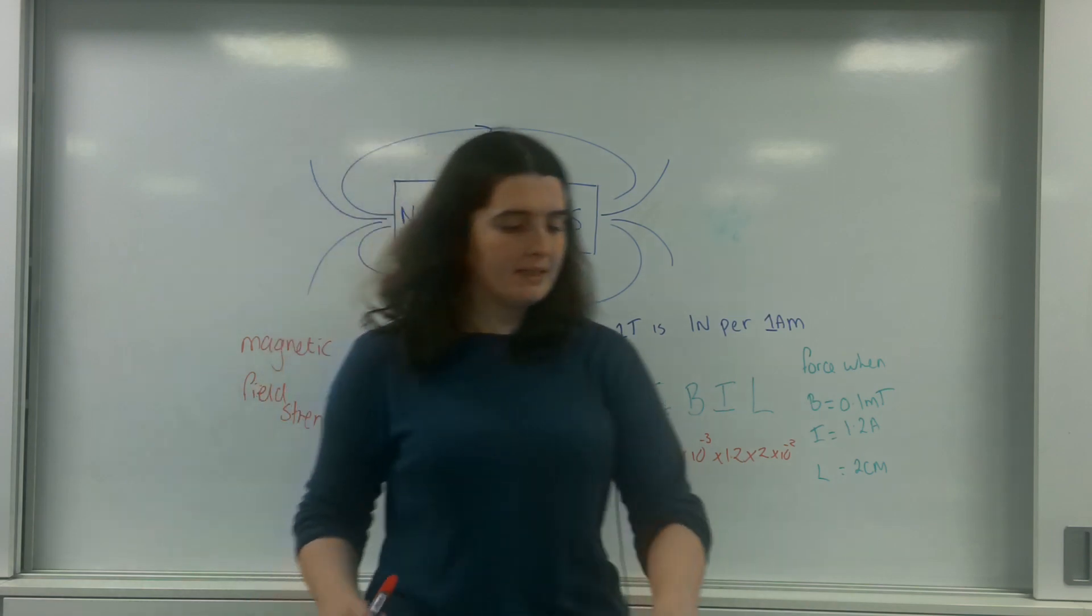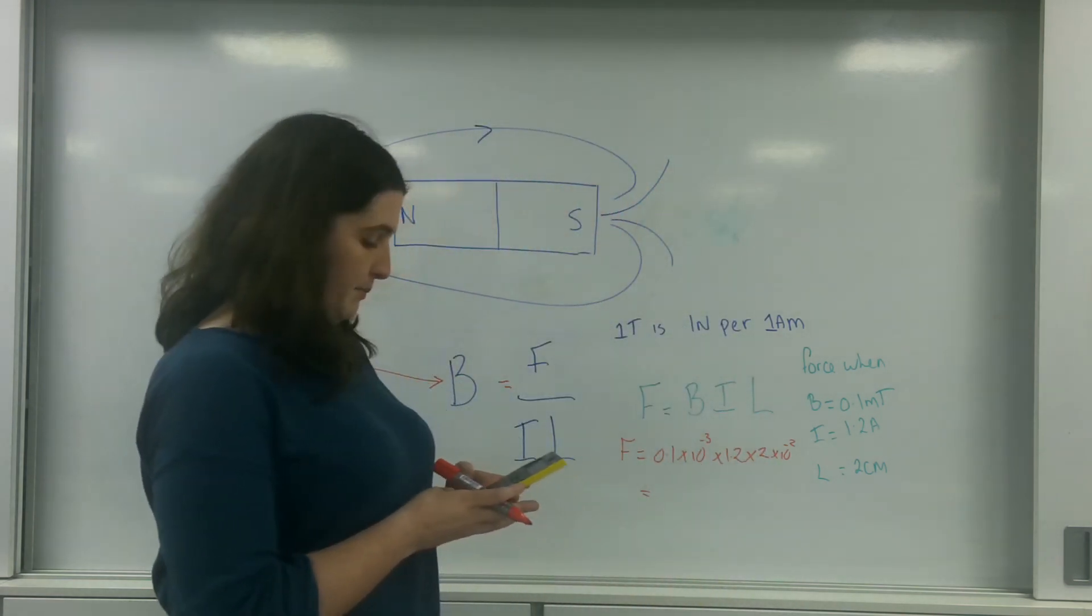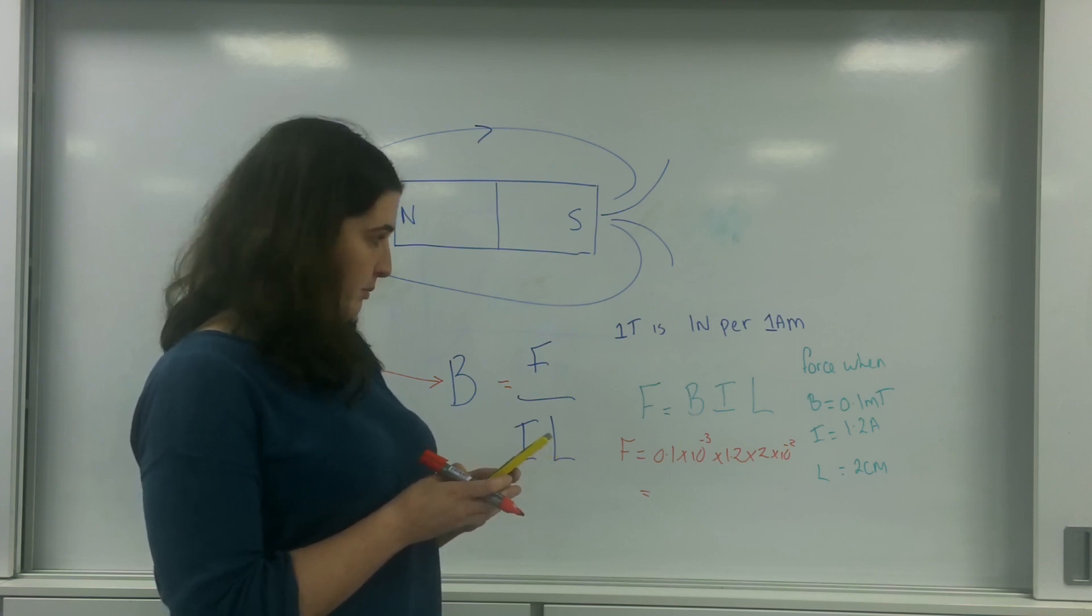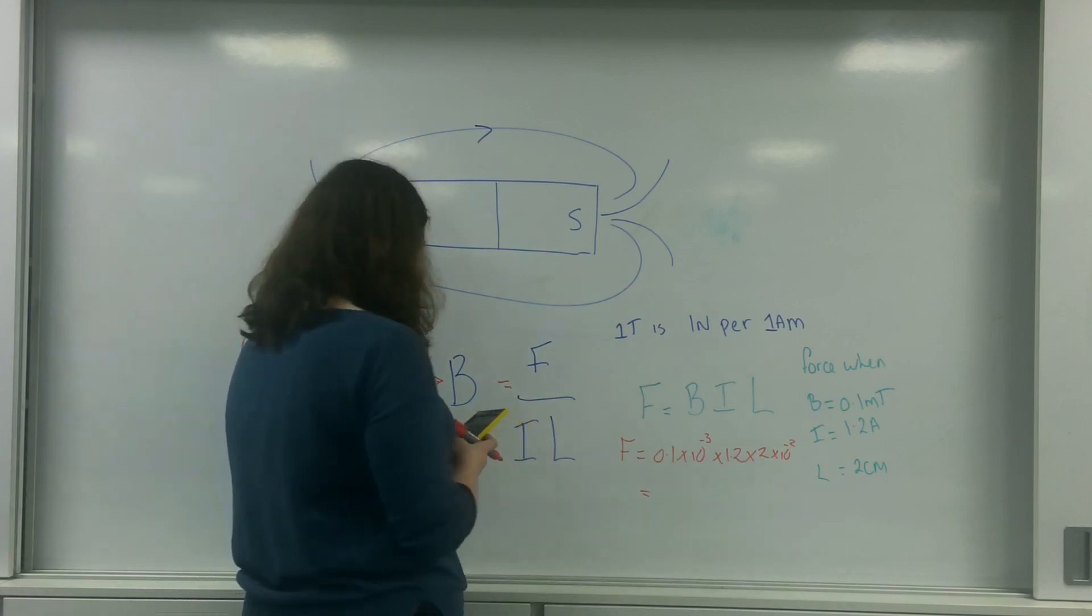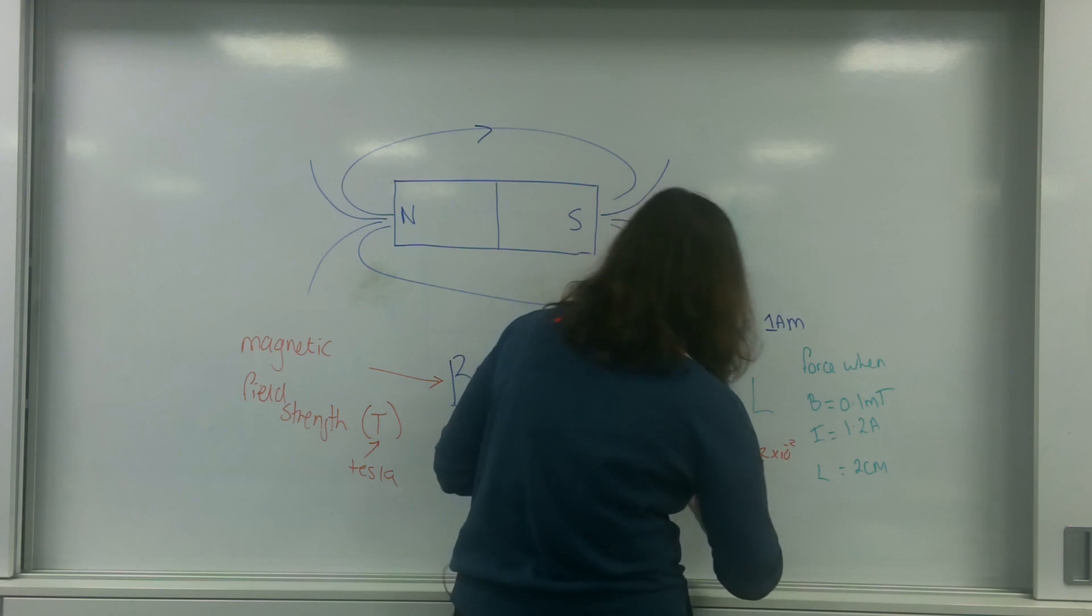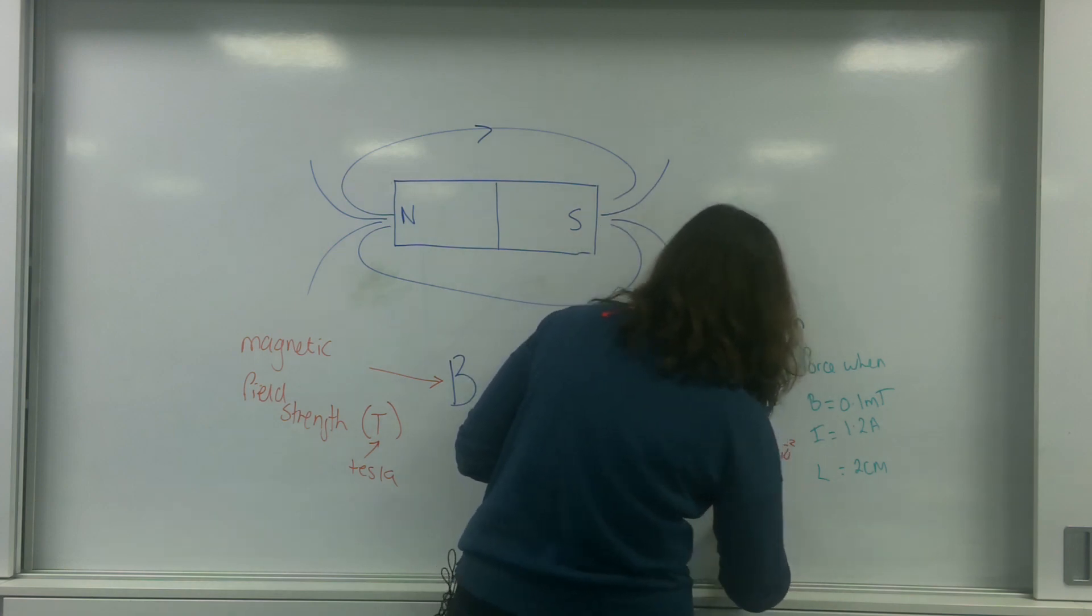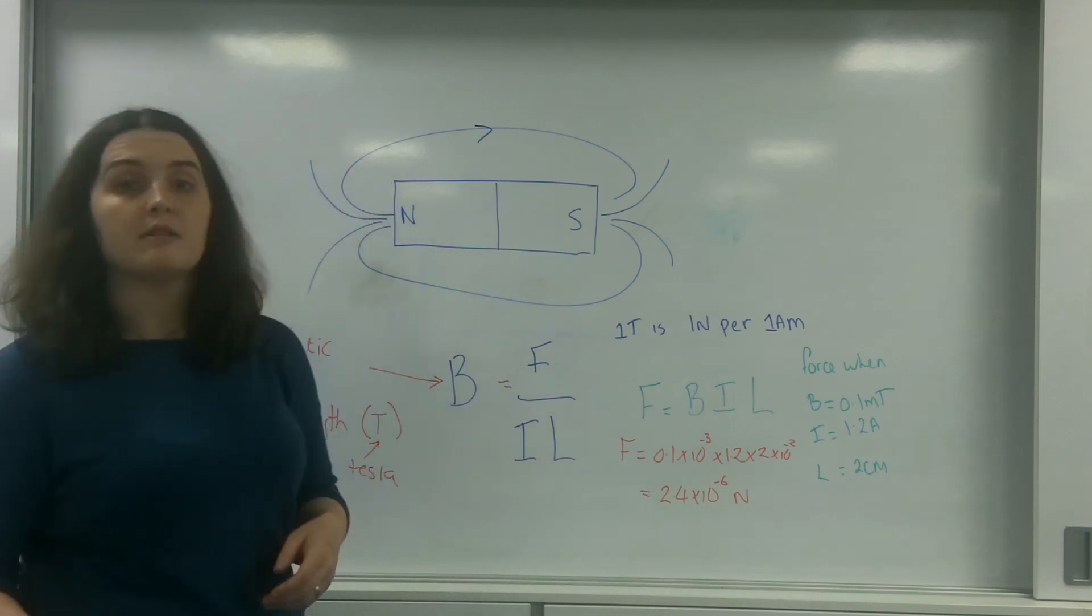Because the length has to be in meters, we get 0.1 times 10 to the minus 3 times by 1.2 times by 2 times 10 to the minus 6 newtons.